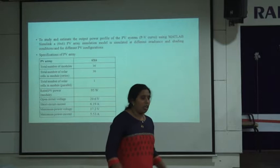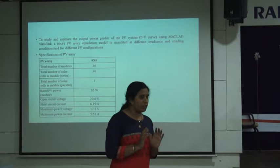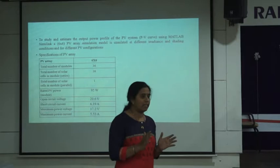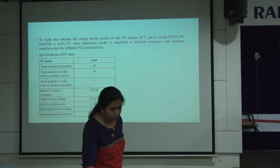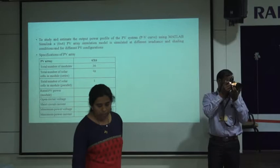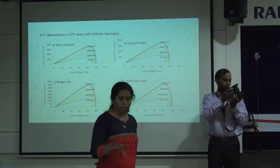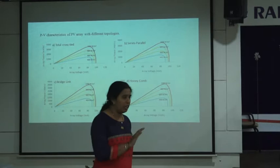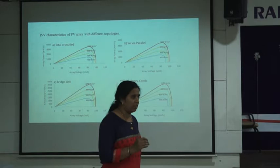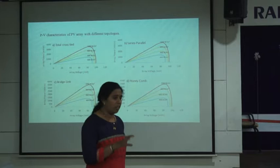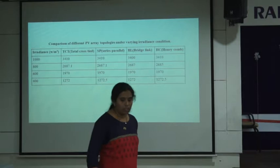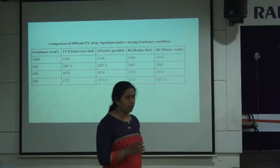Our first objective is to find the topology that will form our base. We prepared a 6×6 PV array with specified parameters modeled in MATLAB. This 6×6 PV array was simulated and the PV characteristics of each topology at varying irradiance conditions were tabulated. Since partial shading does not always occur, varying irradiance also plays an important role, so we first carried out varying irradiance tests on all topologies.